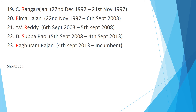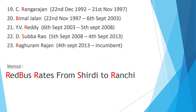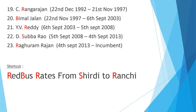The shortcut trick to remember these five governors is: 'Red bus rates from Shirdi to Ranchi' — R for Rangarajan, B in bus for Bimal Jalan, R for Reddy, S in Shirdi for Subbarao, and R in Ranchi for Raghuram Rajan. Very soon, Mr. Ujjit Patel is going to take charge as the twenty-fourth RBI governor on 4th September 2016.